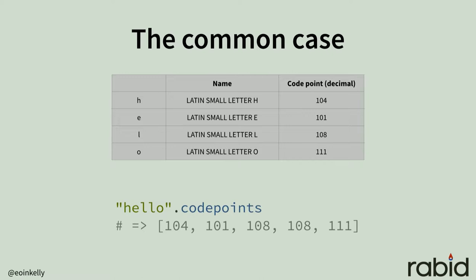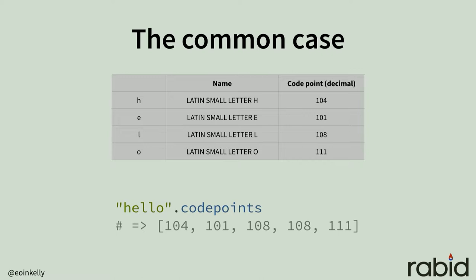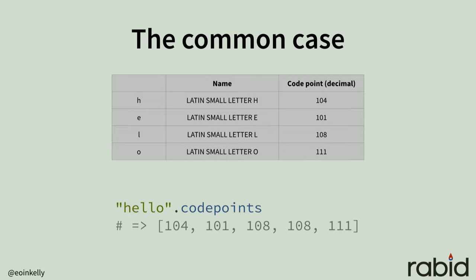Here we see the English word 'hello', a snippet of the Unicode spec, and Ruby's code_points method. The code_points method on string returns an array of decimal numbers representing the code points in that string. Unicode characters are the building blocks of symbols in a language — they are not the symbols themselves. However, what we see here is the common case where there's a one-to-one mapping between these things. It's really easy for us, as English speakers, to think that this is the universal rule, but it is only the common case.